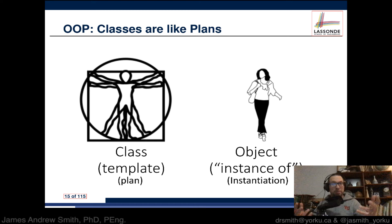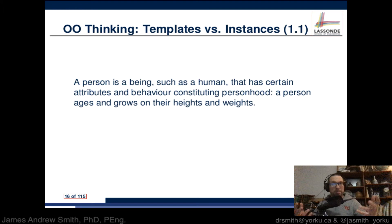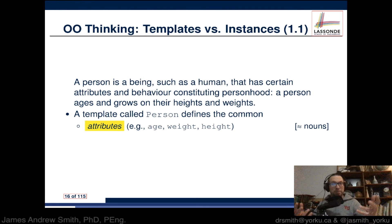So templates and instances, classes and objects: a person is a being such as a human that has certain attributes and behaviors constituting personhood — a person ages and grows based on height and weight. A template called Person defines common things. Common attributes include age, weight, and height. The values for those could differ from one object to another, but all of them will have some age, weight, and height.